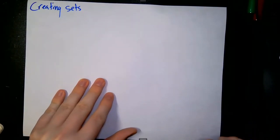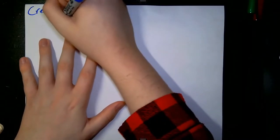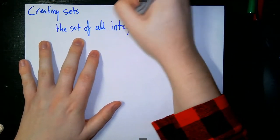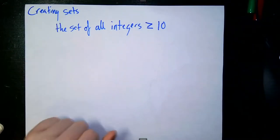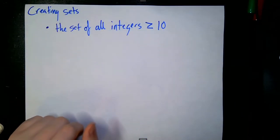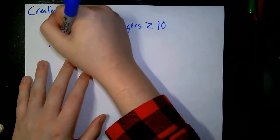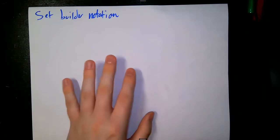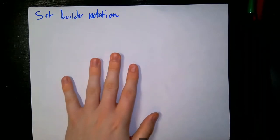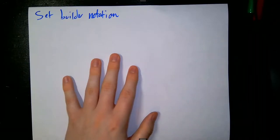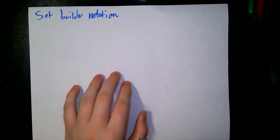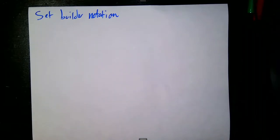When we've created sets in the past, we've used two main methods. The first is verbally describing everything — for instance, 'the set of all integers greater than or equal to 10.' Another way is writing out all the elements: 10, 11, 12, 13, and so on. For more complicated sets, set builder notation is going to be the tool we use because those other methods can be lacking — especially for sets with no discernible pattern or that are very large.